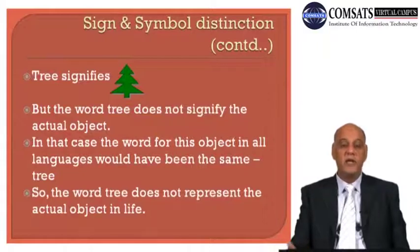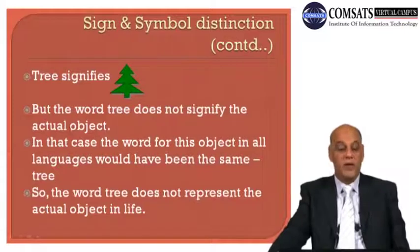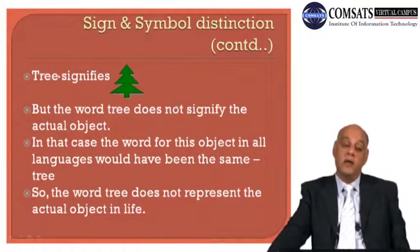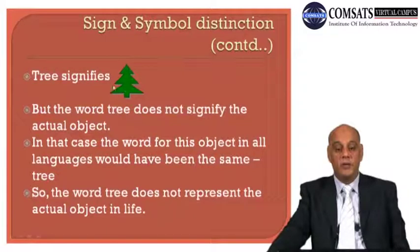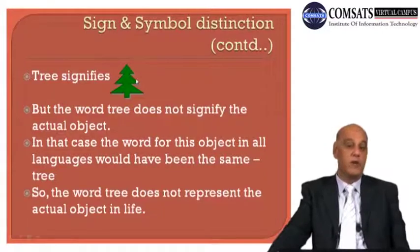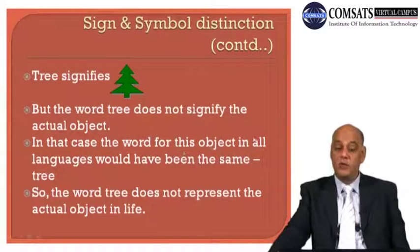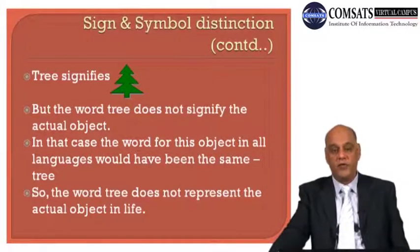Consider the example: 'tree' signifies an object. But the word tree does not signify the actual object — the question arises, do we have the same word in all languages? No. For this very object, we have different words in different languages. If this word meant only this specific object, then we must have the same word in all languages. We have a different word in Urdu, French, and many other languages for this very object.